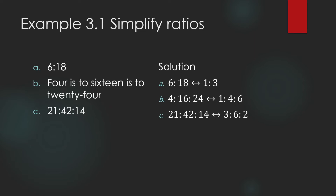For 21 is to 42 is to 14, let us write this in reduced form. 7 is a common factor. 21 divided by 7 is 3, 42 divided by 7 is 6, and 14 divided by 7 is 2. So the ratio in reduced form is 3 is to 6 is to 2.